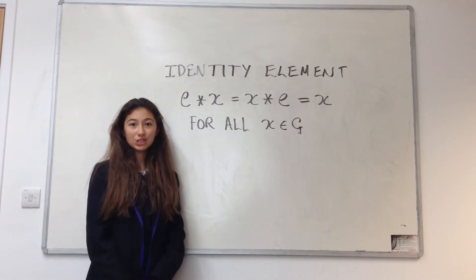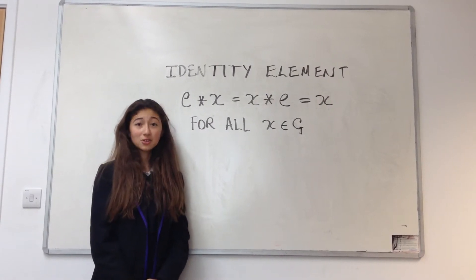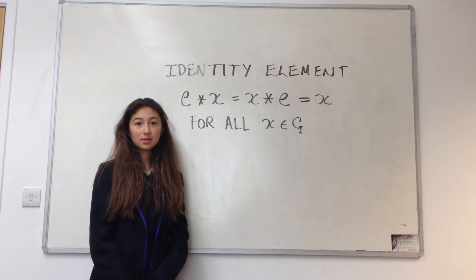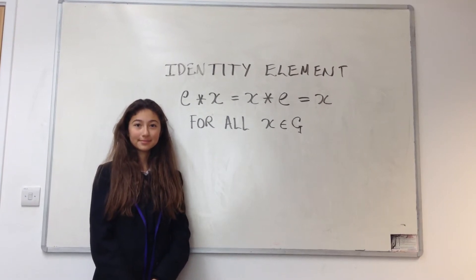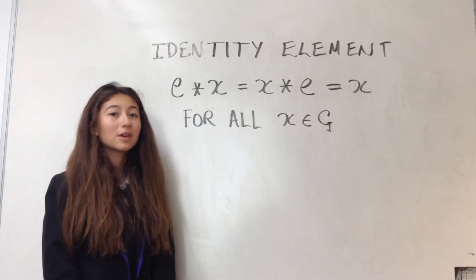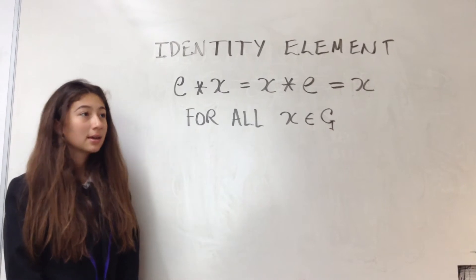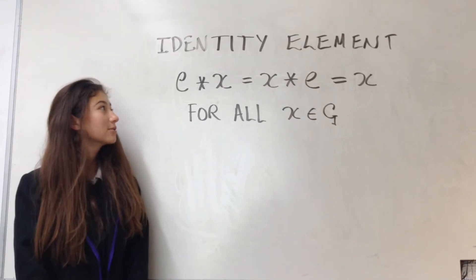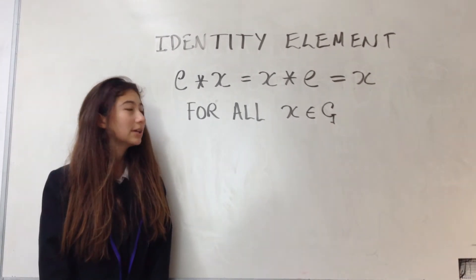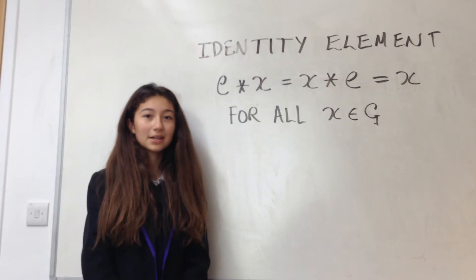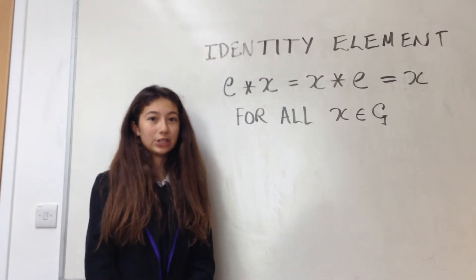Second group property, identity element. There must be one element in G, say E, that does not affect other elements under the binary operation. If we call the identity element E, then E operating on X or X operating on E should still be X. That should be true for all X in G.